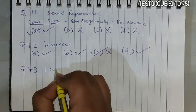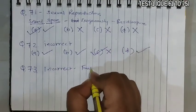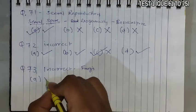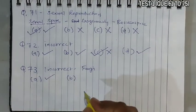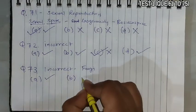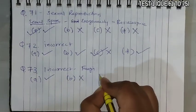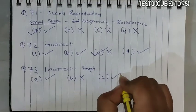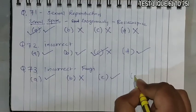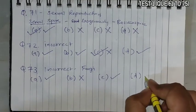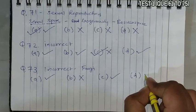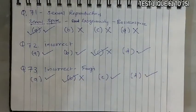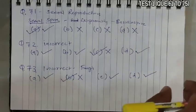Question 73: Identify an incorrect statement about fungi. Option A: 'They are eukaryotic' — correct. Option B: 'All fungi possess purely cellulosic cell wall' — absolutely incorrect, because fungi have chitin in their cell wall, not cellulose. Option C: 'They are heterotrophic' — correct, fungi cannot perform photosynthesis. Option D: 'They are both unicellular and multicellular' — correct, yeast is unicellular and higher fungi are multicellular. The incorrect statement is option B.